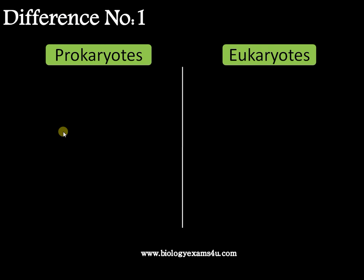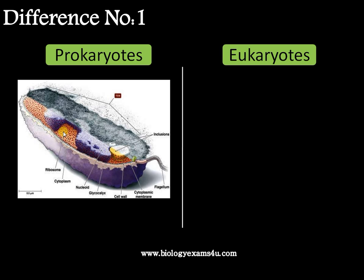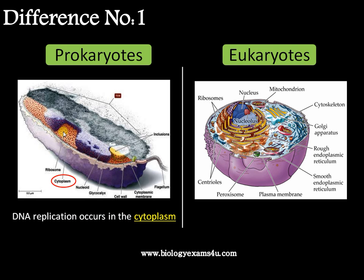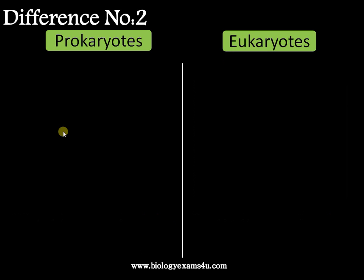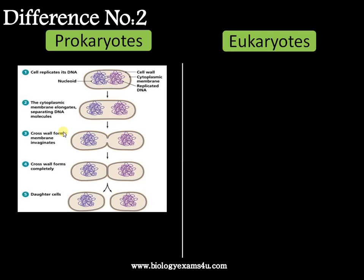All together this forms the central dogma of biology, where DNA directs the synthesis of proteins. Moving into the differences: difference number one is regarding the site of DNA replication. In prokaryotes, DNA replication occurs in the cytoplasm, whereas in eukaryotes the site of DNA replication is the nucleus.